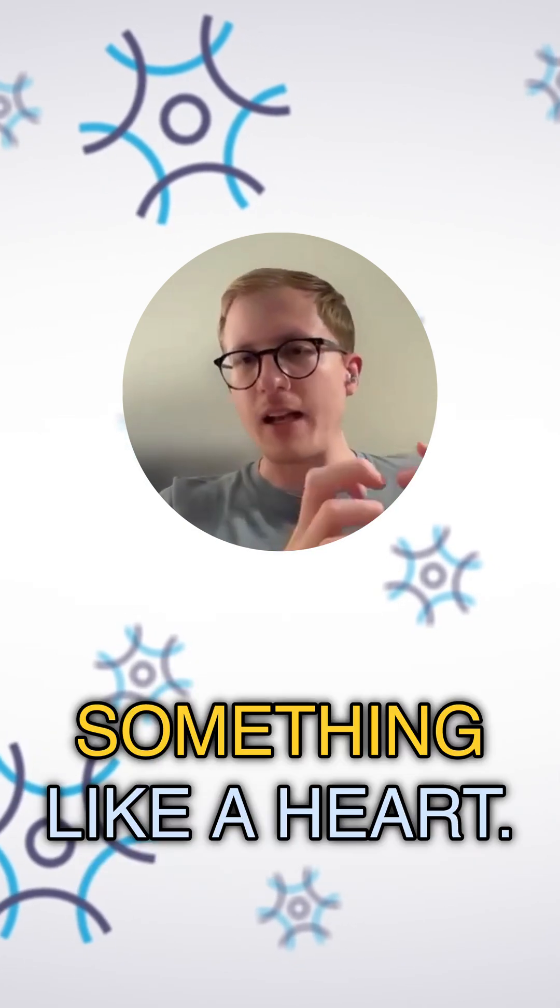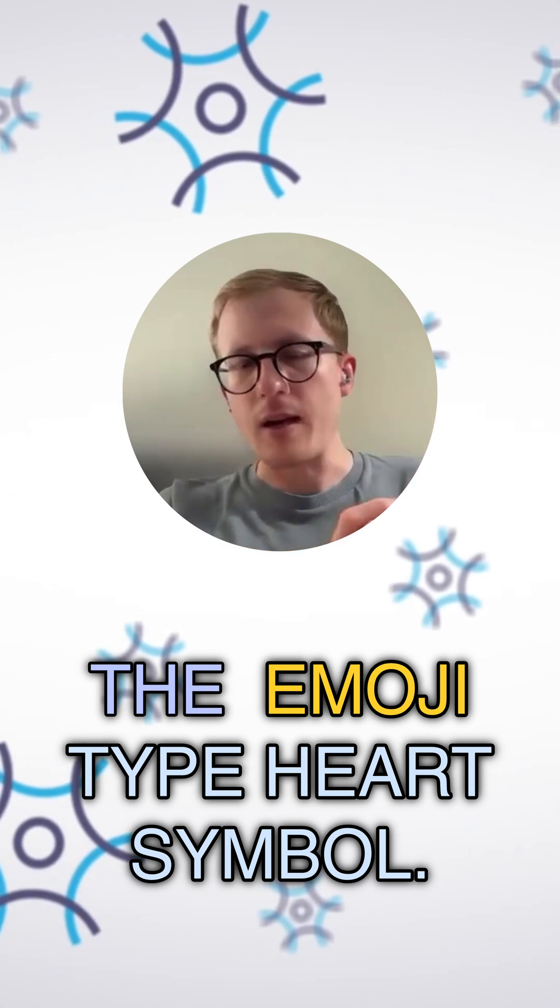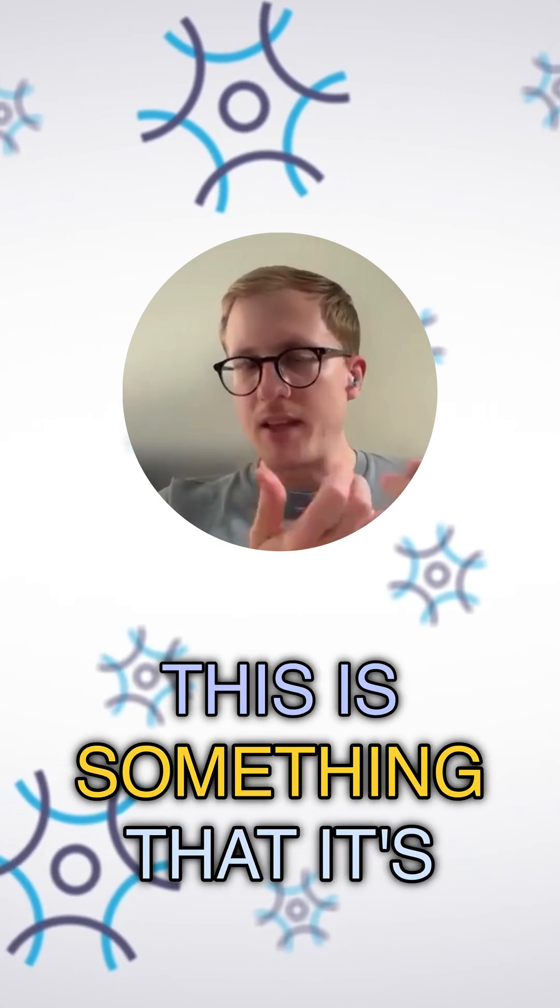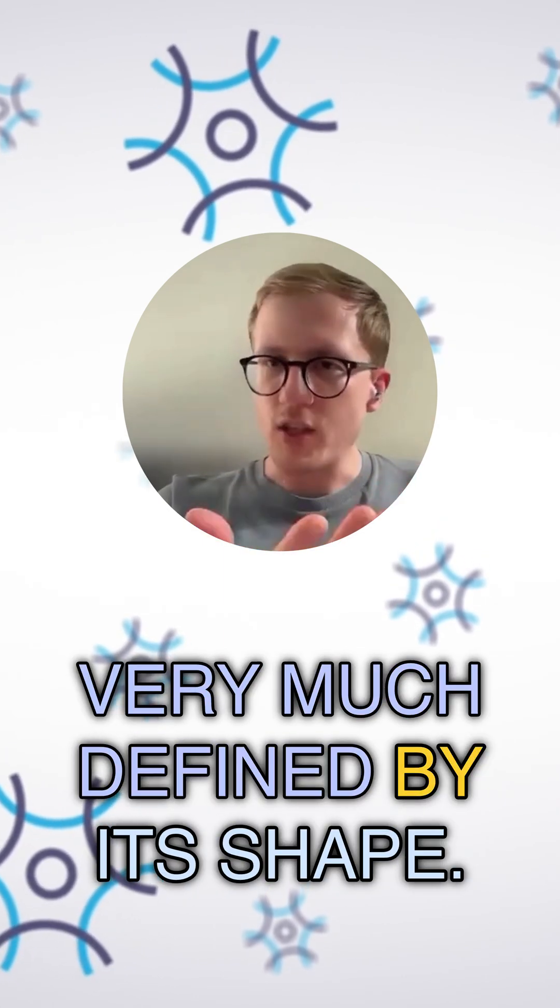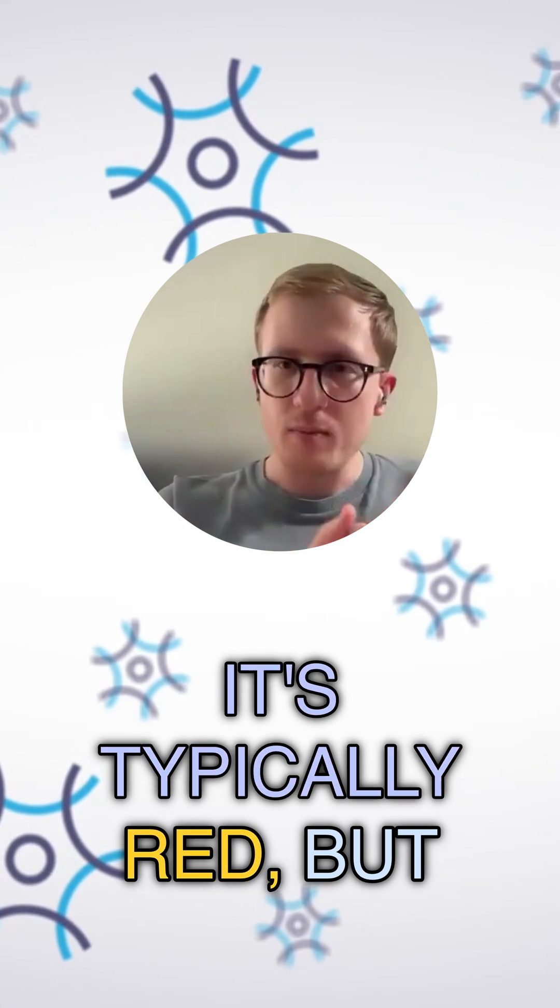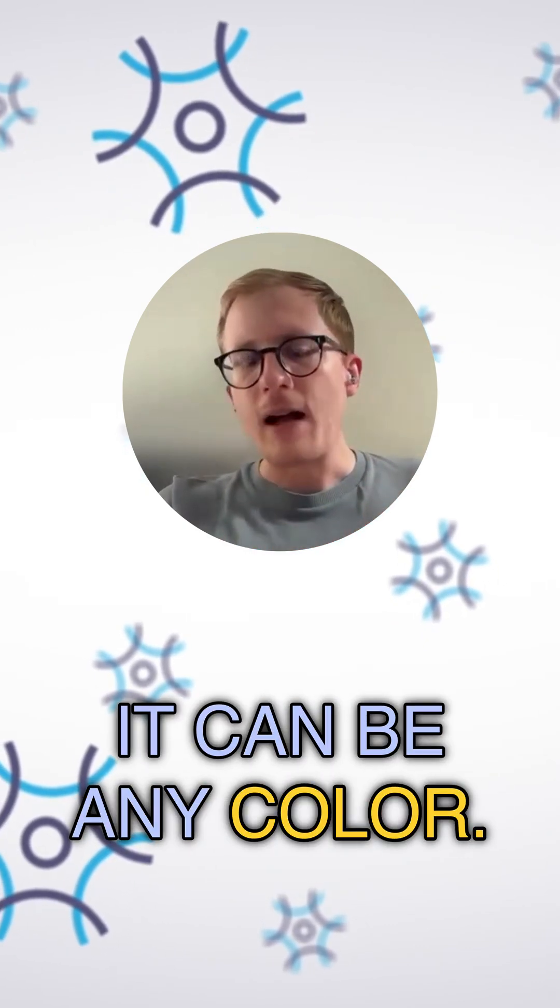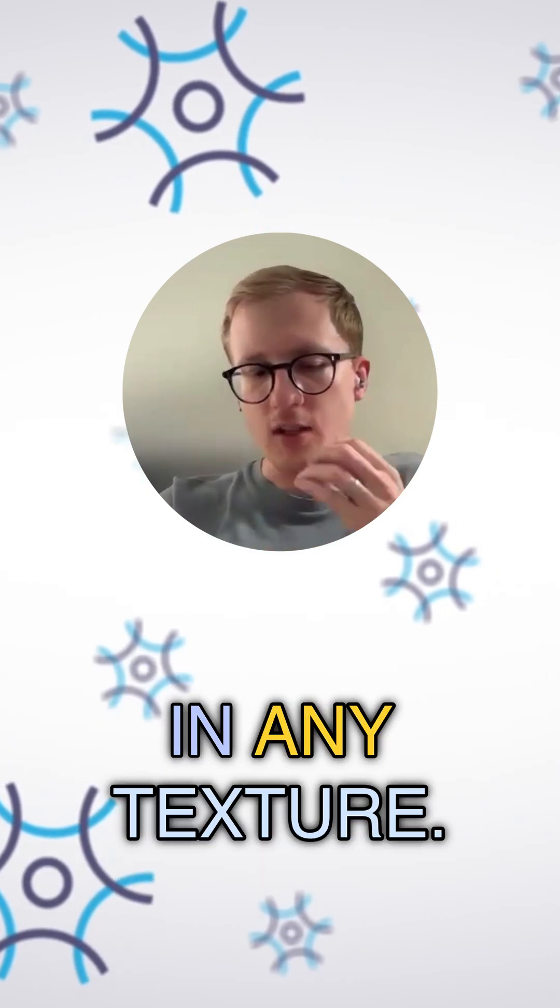A simple example is something like a heart, the emoji type heart symbol. This is something that's very much defined by its shape. It's typically red, but it's not always red. It can be any color and it could also be covered in any texture.